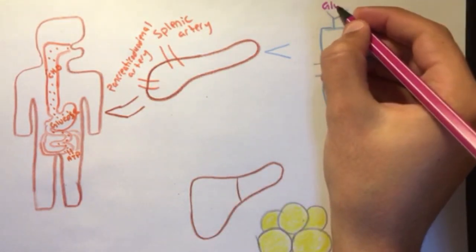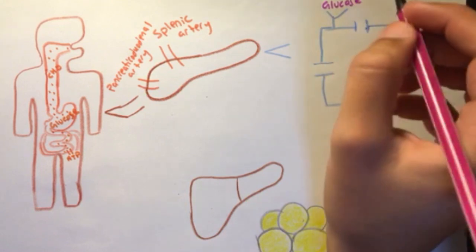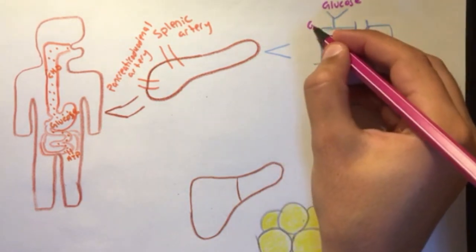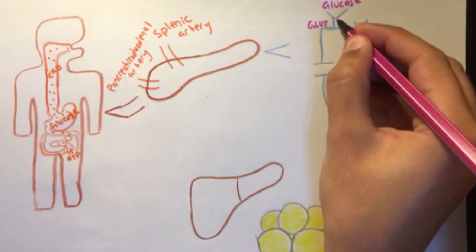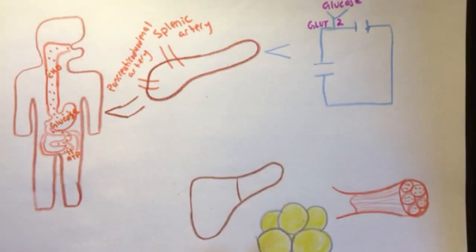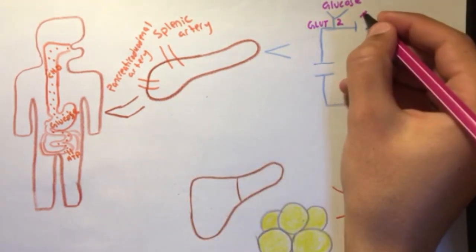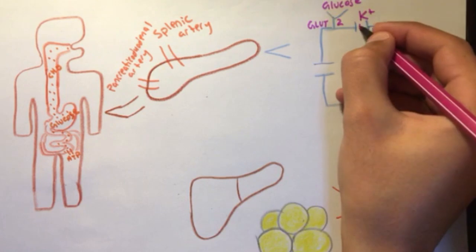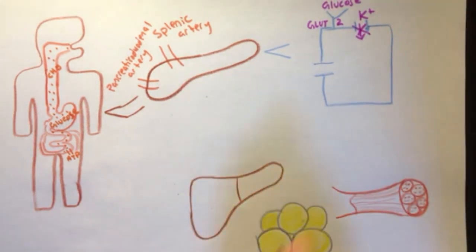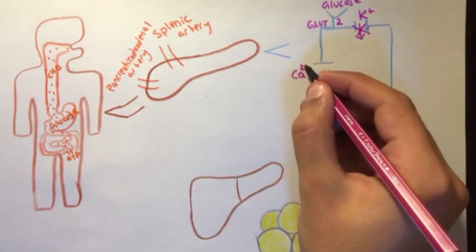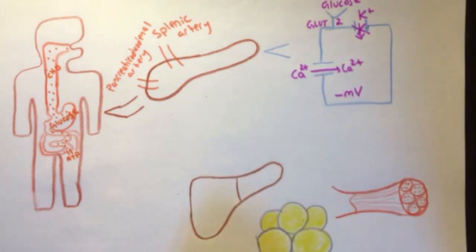Glucose will reach the beta cells and bind to a specific cell receptor, called GLUT2 receptor, or glucose transporter 2 receptor. This causes potassium channel inhibition, leading to depolarization, that causes opening of calcium channels, secreting insulin.